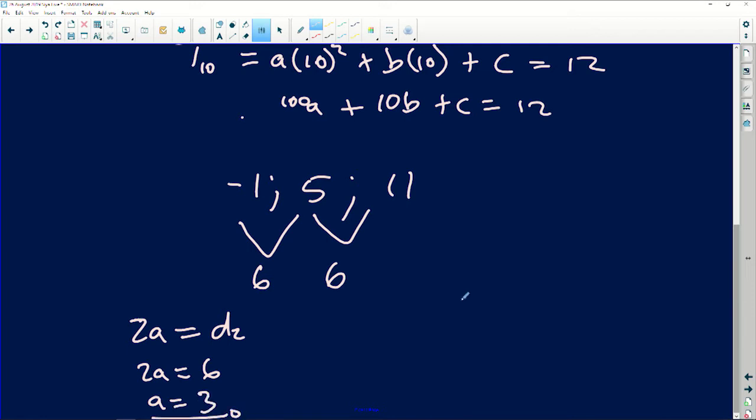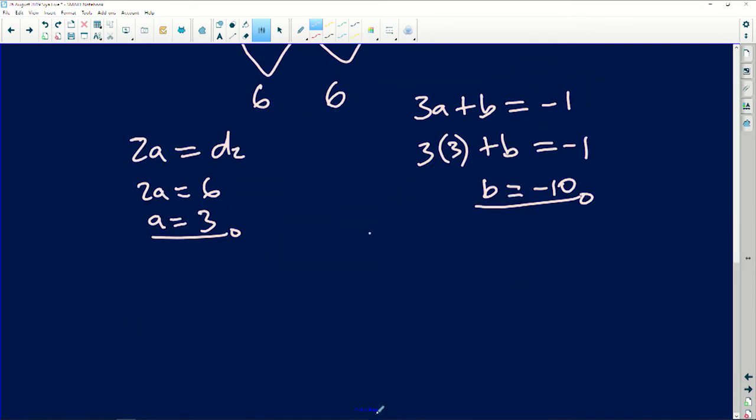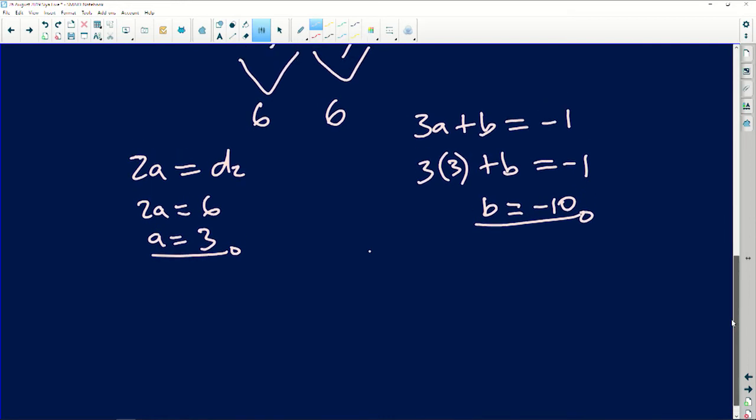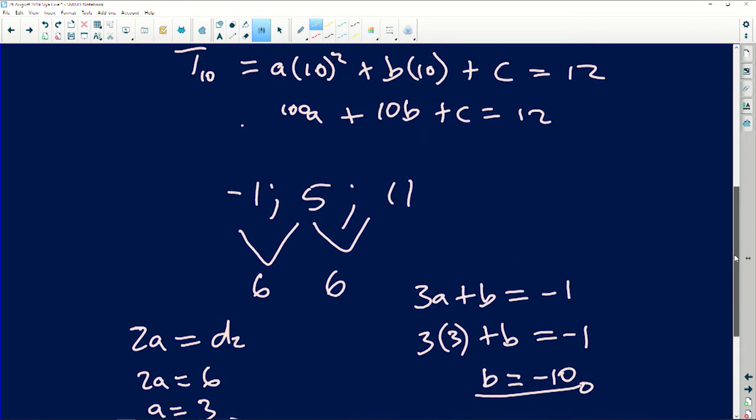Then number two, I will say I have 3a plus b is equals to the first term of the first difference, which is -1. Then I'll say 3 into 3 plus b is equals to -1. Then 3 times 3 is 9, therefore b is equals to -10. Now so far I'm looking good with what they wanted me to do. Remember I said hide that part so we're not focusing on what they want us to find. If my answers are the same as theirs, then it means I'm on the right track. If not, it means I'm lying to mathematics.